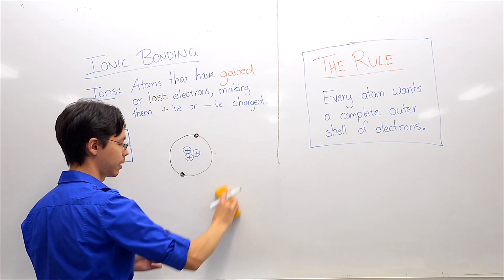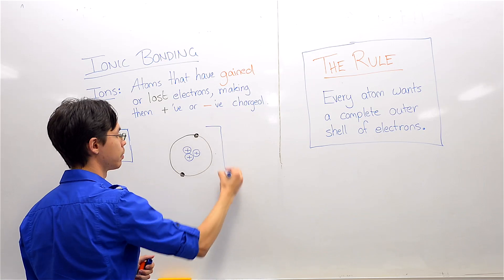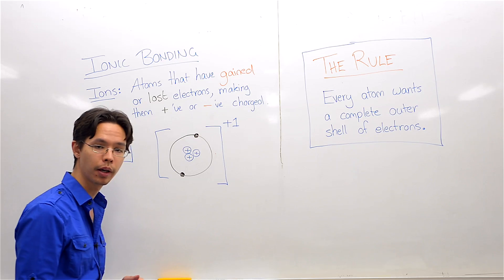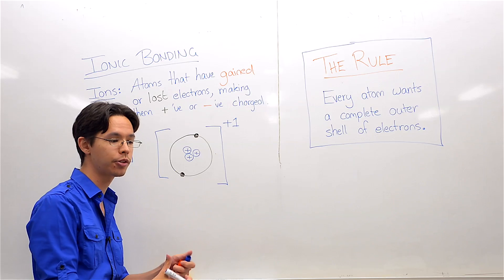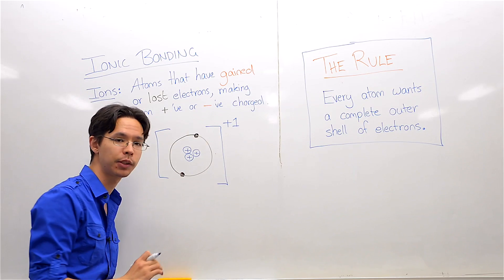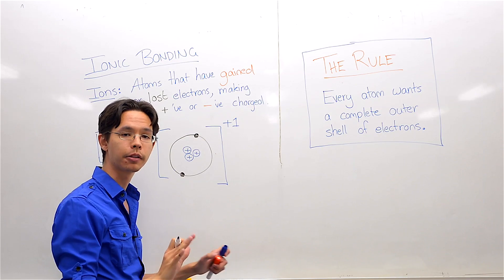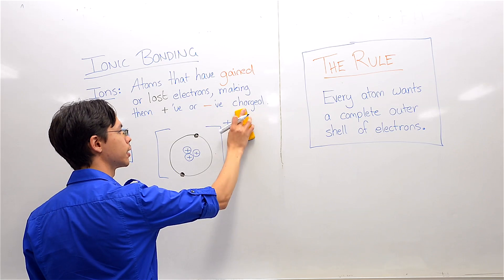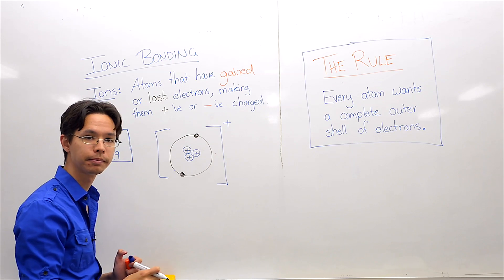This means that the atom has become positively charged — positive one. Now, there is this thing about chemists and chemistry: we are very lazy. If we can find a way to write less stuff down, we will. Every time we see the number one, we don't write it down — we imagine it's there but don't write it on paper. So you could say it's just simply positive. We imagine the number one is there.